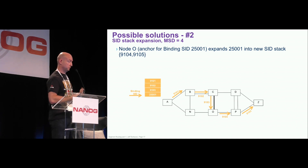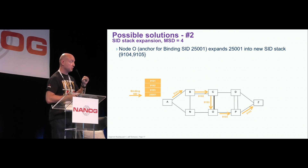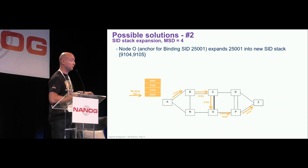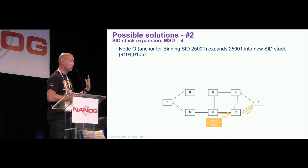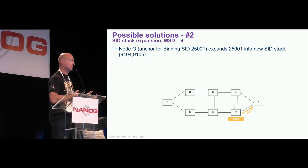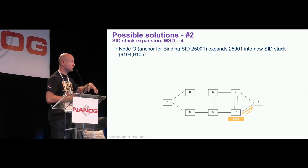We use a binding SID to expand to a new SID stack at the node that is the last node within the MSD supported. We push a four-label stack — the maximum we can support — where the bottom label is the binding SID. The important point here: binding SID cannot be the top label. It's a local label and can only be looked up in context. In this case, the binding SID is only relevant to node O, identified by label 9103. As we pop labels and reach node O, node O looks up the binding SID, expands it to another SID stack pushing labels 9004 and 05, and now we can go to the destination. You can build this on a lengthy path — you just need to expand and have the PCE compute accordingly.